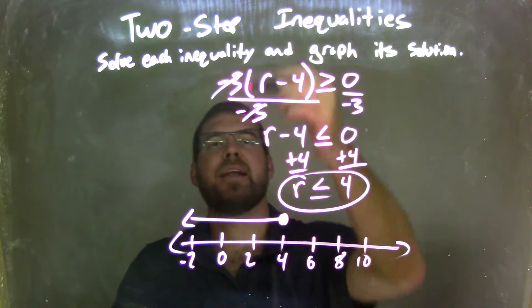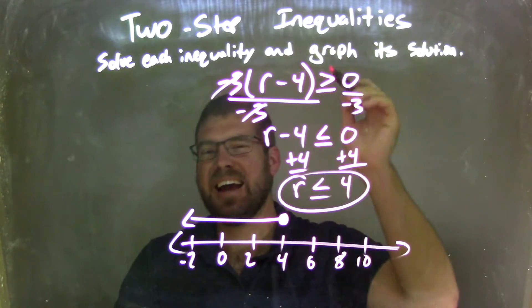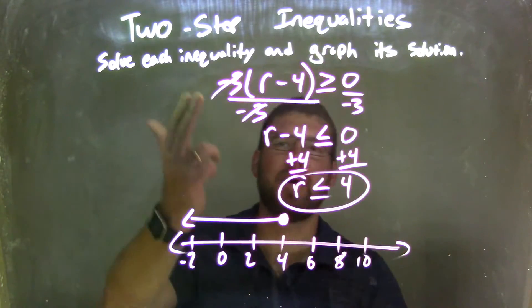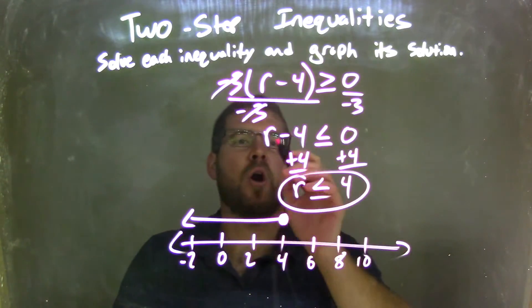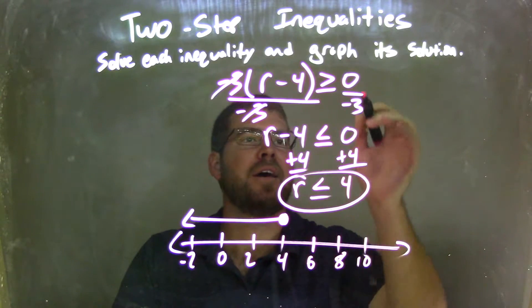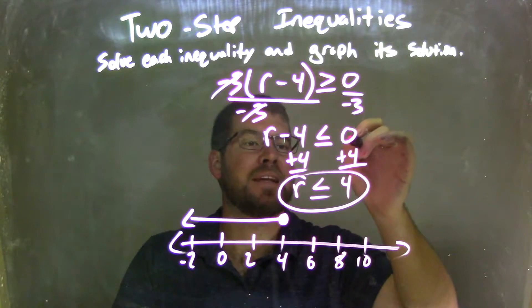So let's recap. We have negative 3 times parentheses r minus 4 end parentheses, and that's greater than or equal to 0. I divided both sides by negative 3, giving me r minus 4 on the left, and 0 divided by negative 3 being 0 on the right.